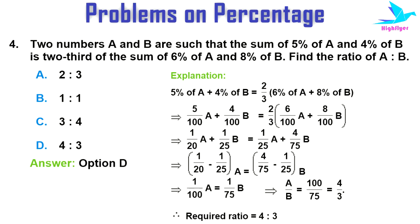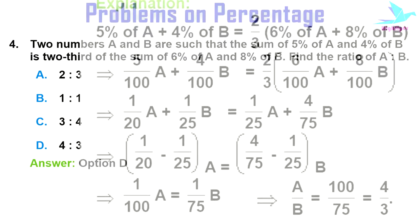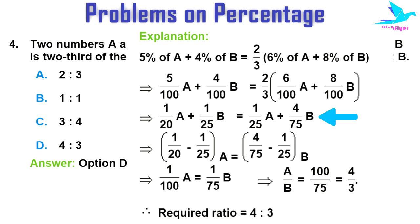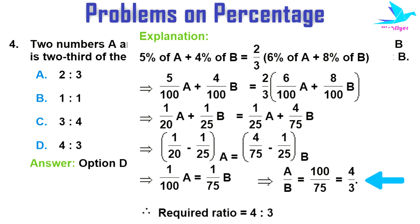The condition is: 5% of A + 4% of B = (2/3) of (6% of A + 8% of B). Putting this into equation form: 5/100 × A + 4/100 × B = 2/3 × (6/100 × A + 8/100 × B), which simplifies to 1/20 × A + 1/25 × B = 1/25 × A + 4/75 × B. Bringing A terms to one side and B terms to the other, we get 1/100 × A = 1/75 × B. Simplifying, A/B = 100/75 = 4/3. So the required ratio is 4:3.